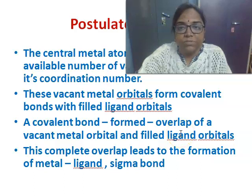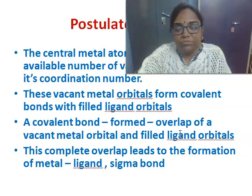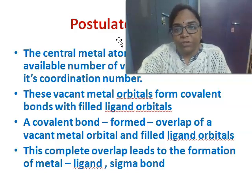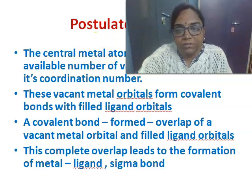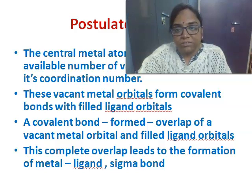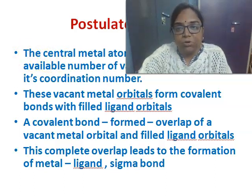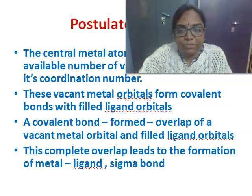Next come the postulates of valence bond theory. Linus Pauling framed some rules and regulations for predicting the geometry of a particular complex and how a complex is formed. A complex is formed by the overlapping of the vacant metal orbitals and the filled ligand orbitals. The first postulate states that the central metal ion makes available a number of vacant orbitals equal to its coordination number, and these vacant metal orbitals form covalent bonds with the filled ligand orbitals.